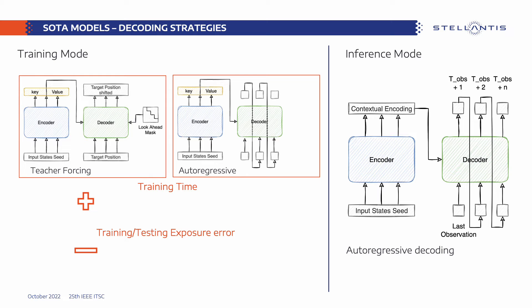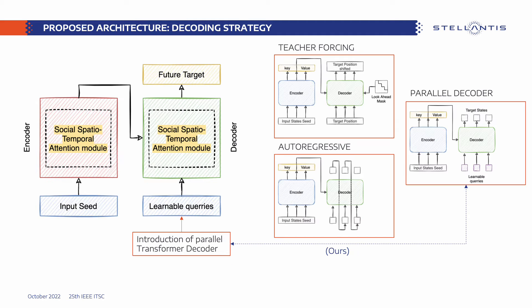This shift is due to error accumulation on the model's own predictions instead of using ground truth as input. Some works such as AgentFormer apply autoregressive decoding during both training and testing, which eliminates the exposure bias problem but at the cost of slow training. However, in both cases, the autoregressive decoding strategy during inference induces a large inference time. In our paper, we wanted to take advantage of the parallelization power of transformers during both inference and training without suffering from the exposure bias problem.